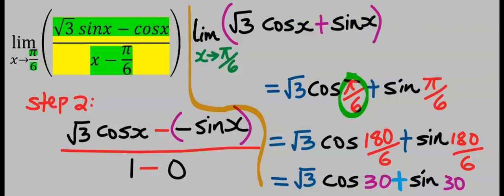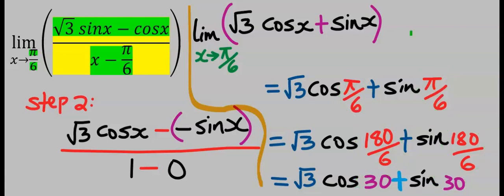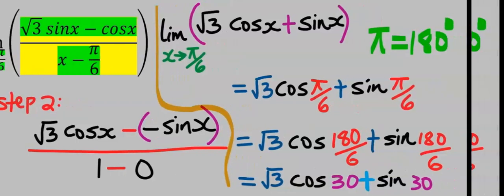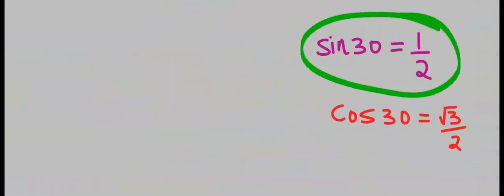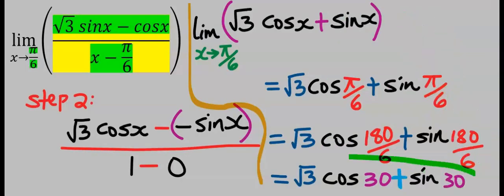Pi over 6 is the same thing as 180 divided by 6, which is 30 degrees. Remember, for a trigonometric function, pi is the same thing as 180 degrees. Sin 30 is 1 over 2 and cos 30 is root 3 over 2. Hence, this will become...